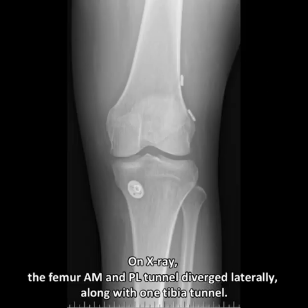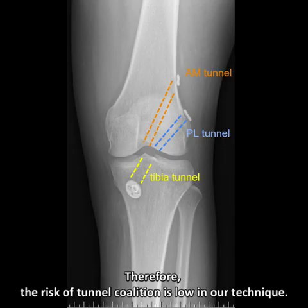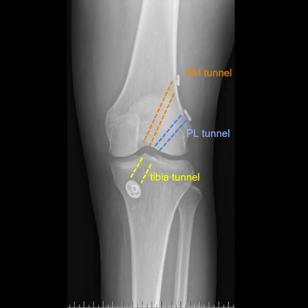On X-ray, the femoral AM and PL tunnels diverged laterally along with one tibial tunnel. Therefore, the risk of tunnel coalescence is low with our technique.